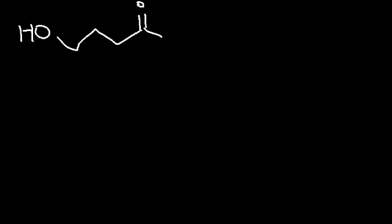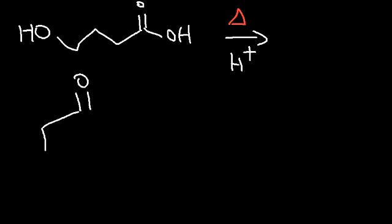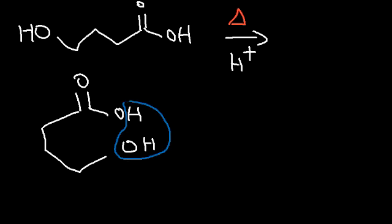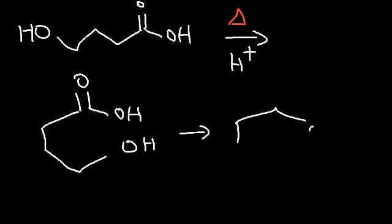Now what if we have a molecule that contains an alcohol and a carboxylic acid, and we add heat? Whenever a carboxylic acid reacts with an alcohol under acidic conditions with heat, it's going to produce an ester. We're going to redraw the molecule in a different way, and water is going to be removed. This is going to produce a cyclic ester molecule — this is known as a lactone.